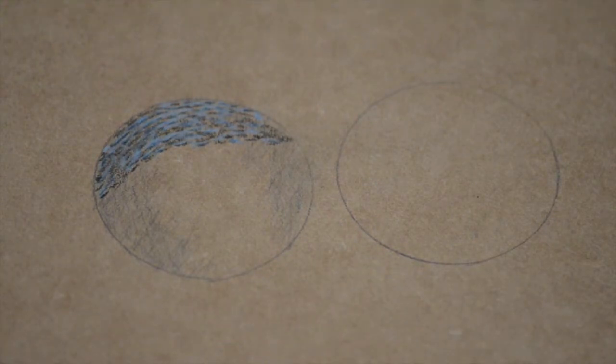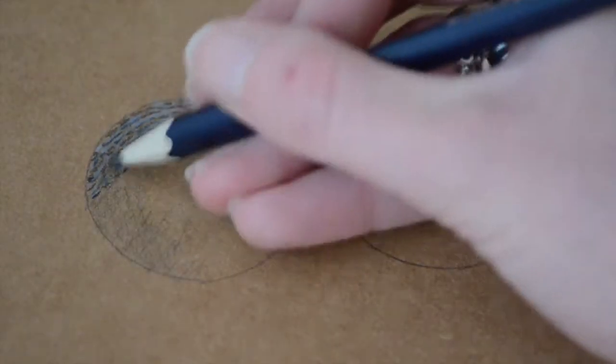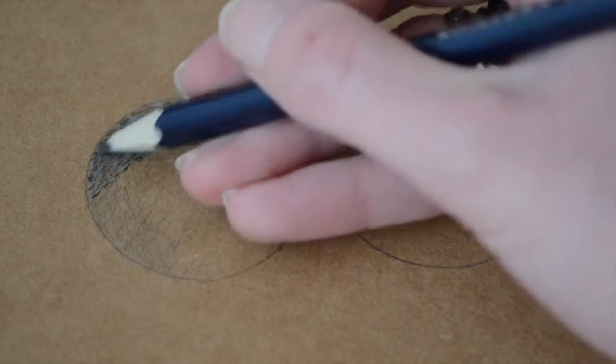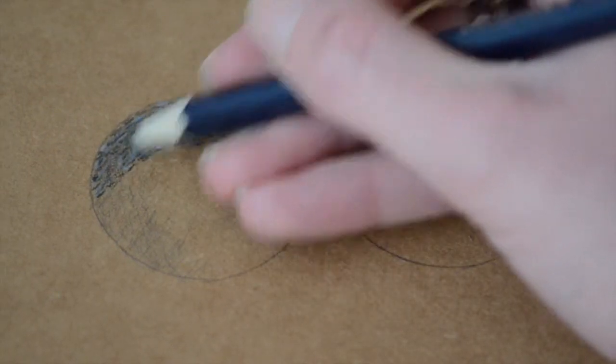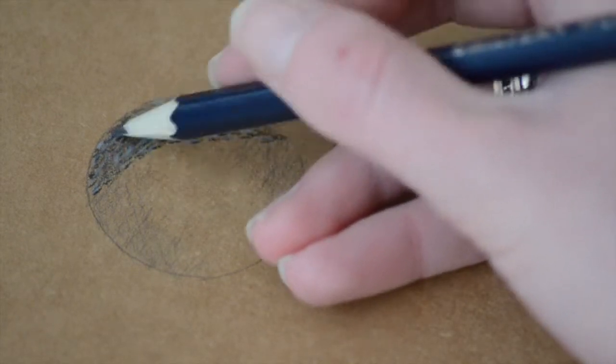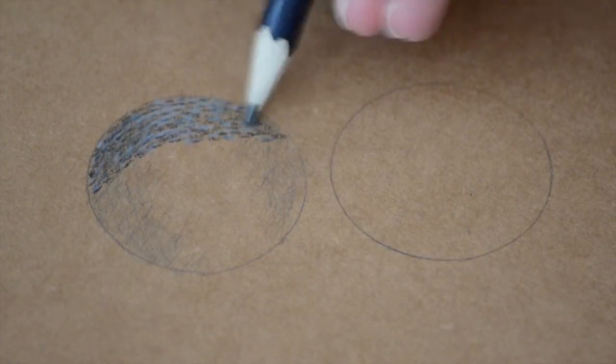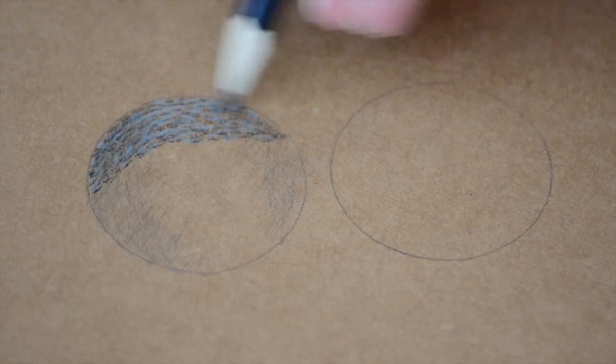Once you've built up your first layer like this, take something like a graphite pencil and then apply a very light layer of shade over the top of this small layer of dashes. And what this does is it just helps to start to block out some of the gaps where the paper is showing through underneath.